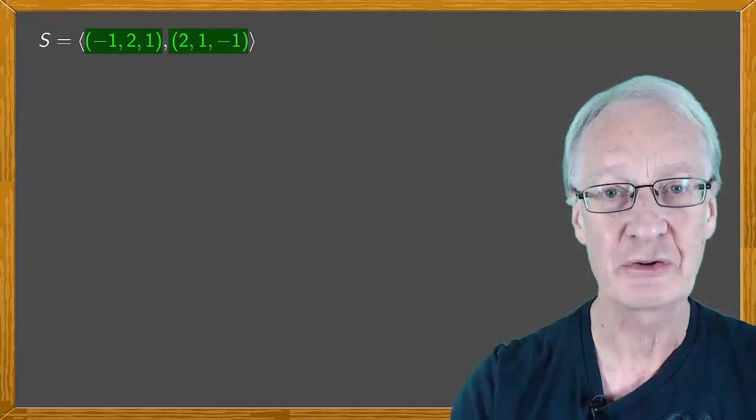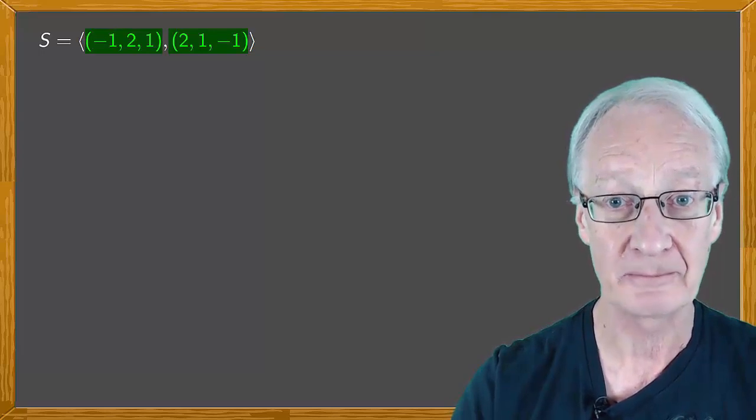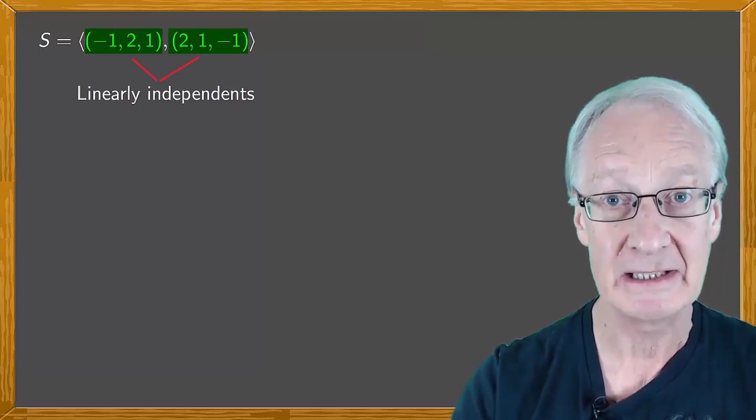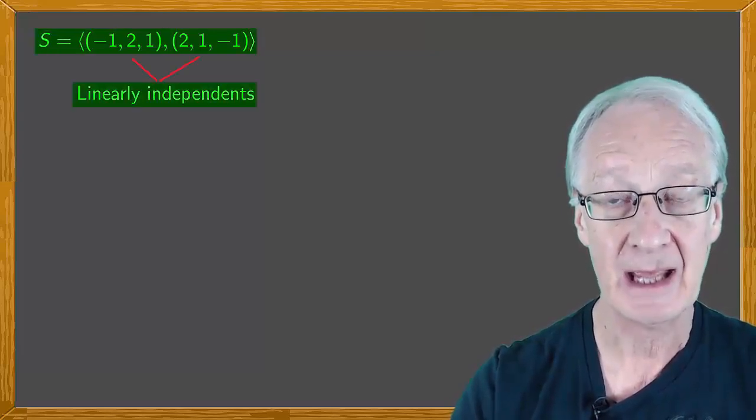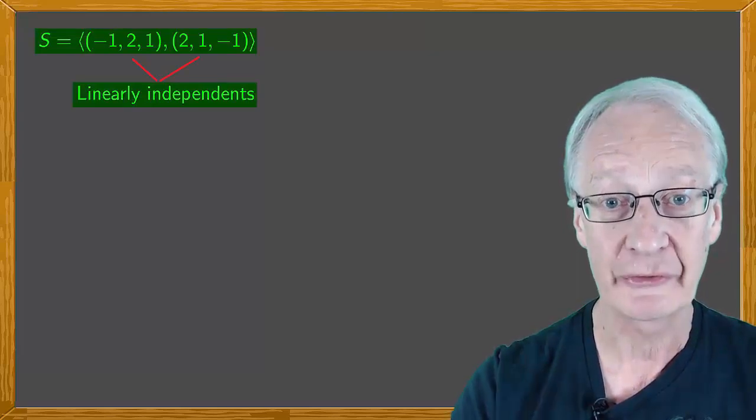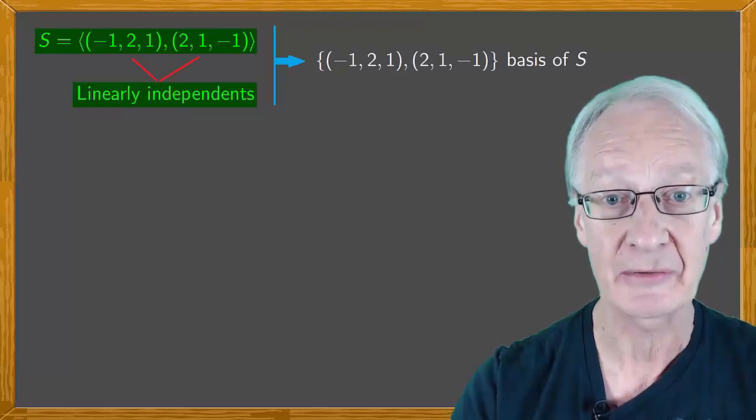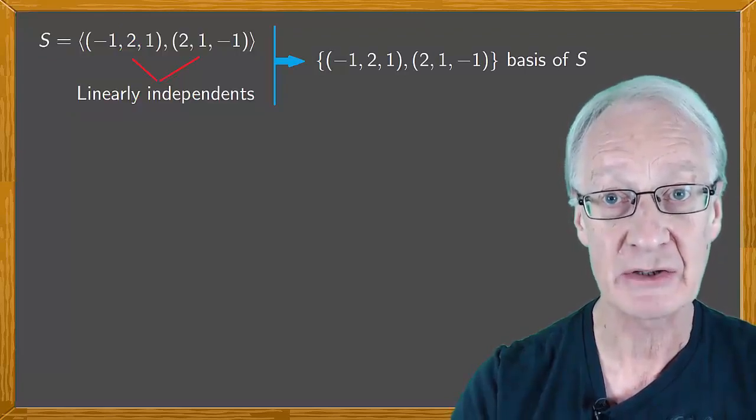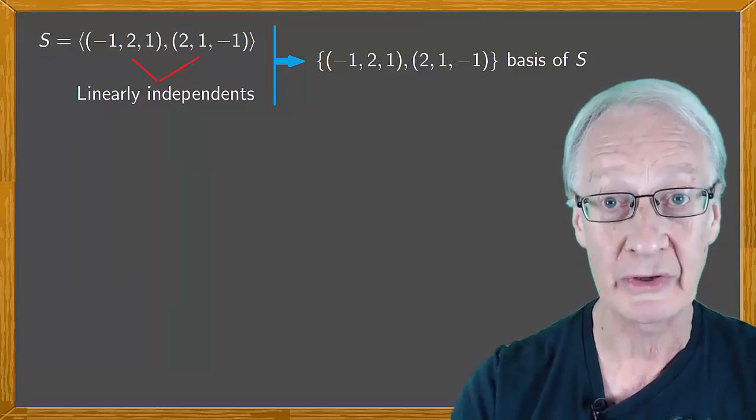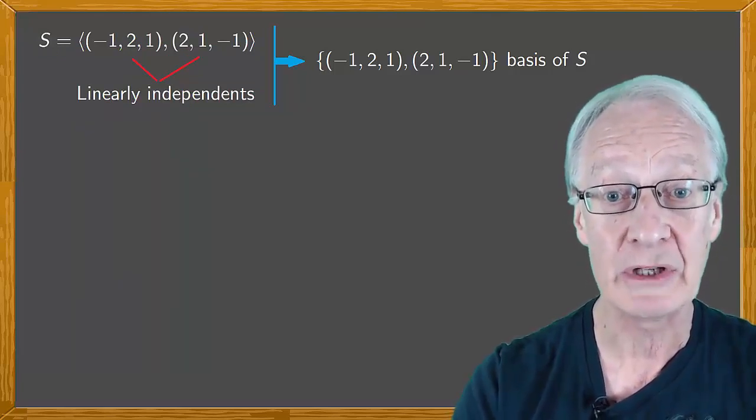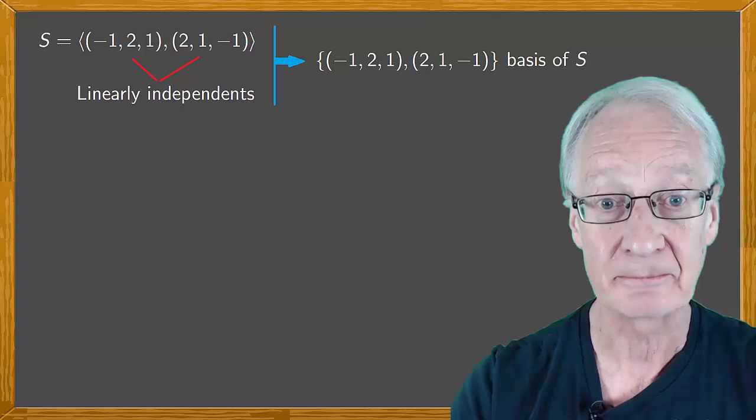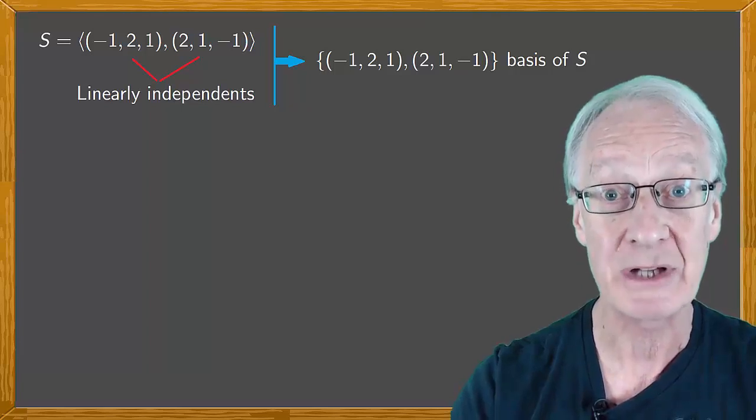First notice that the two vectors aren't proportional therefore they're linearly independent and as they're also a generator system of S they form a basis of S. To calculate the Cartesian equations though we won't work with this basis. Instead we're going to use a simpler one. Let's see how to obtain it.